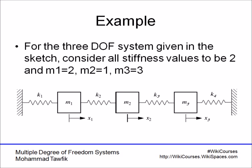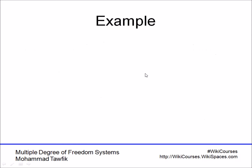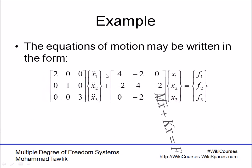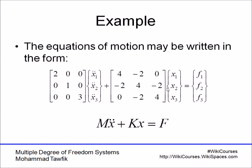Now let's look at this simple example. We have a three degree of freedom system with three masses m1, m2, and m3, four stiffnesses connected as the sketch shows, and each mass has a force associated with it: f1, f2, and f3. Using numbers, the stiffnesses are all equal to 2 Newton per meter and the masses are 2, 1, and 3 kilograms. In matrix form, we get the differential equation: mass times acceleration plus stiffness times displacement equals f.